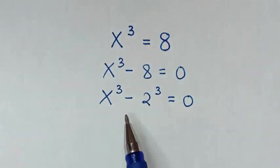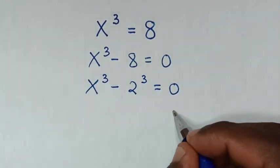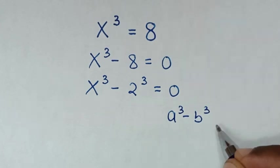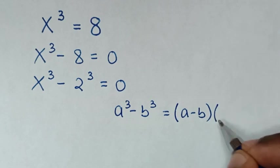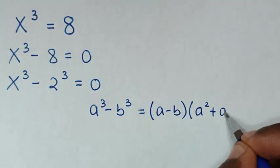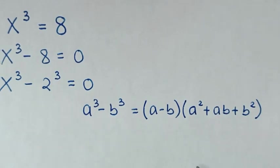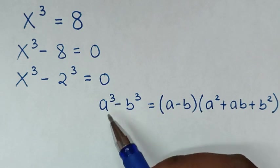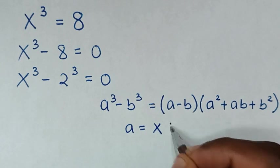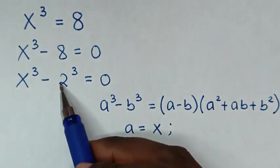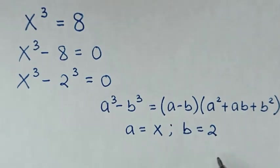The left side is in the form of a perfect cube difference. So we'll apply the difference of cubes rule, which is: a³ - b³ = (a - b)(a² + ab + b²). Comparing a³ with x³, we get a = x, and comparing b³ with 2³, we get b = 2.